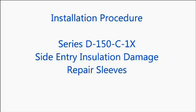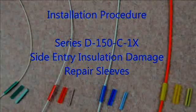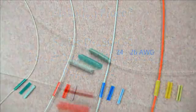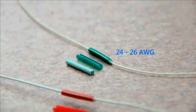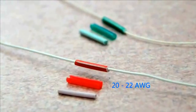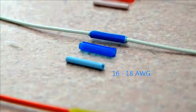This video illustrates the installation procedure for Series D-150-C Side Entry Insulation Damage Repair Sleeves. These sleeves are designed to repair and seal primary wire jackets with chafed insulation, radial cracks up to 360 degrees, or nicks and scrapes up to one quarter inch long.